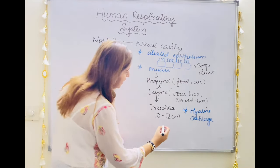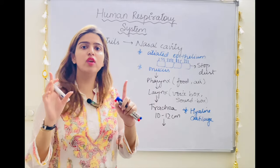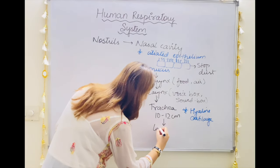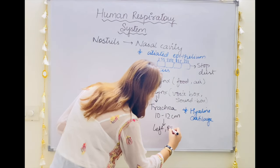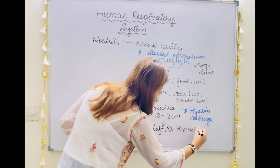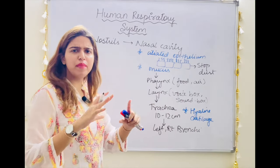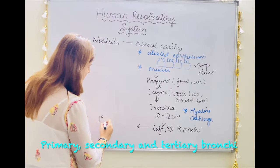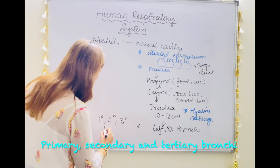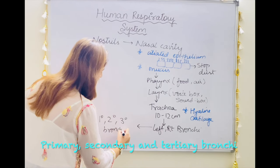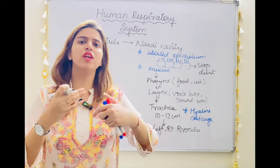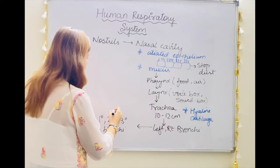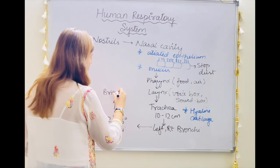After the trachea, at the level of the lungs it divides into left and right primary bronchi. These primary bronchi make a bronchial tree — they divide into primary, secondary, and tertiary bronchi. After this division the tertiary bronchi lead further into smaller units called bronchioles.